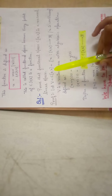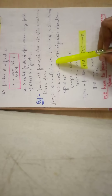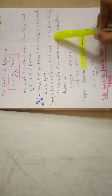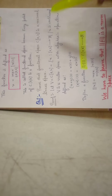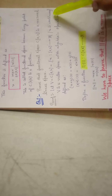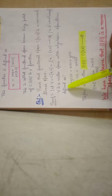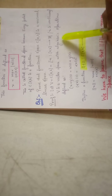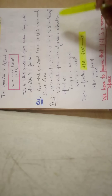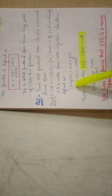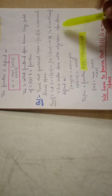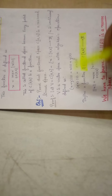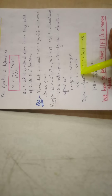Let V = C[a,b], where x is a function from [a,b] to ℝ and x is continuous. V is a vector space with algebraic operations defined as: (x + y)(t) = x(t) + y(t), and (λx)(t) = λ·x(t).